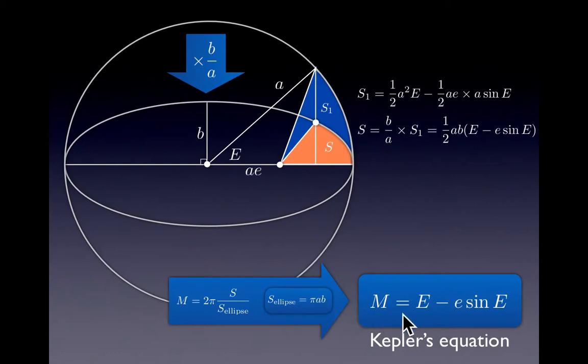The relation is done through another angle called the mean anomaly, which is an angle going from 0 to 2π, which is proportional to this area. Since the area covered by a particle on a Keplerian motion is proportional to the time that passed since it was at the closest separation.